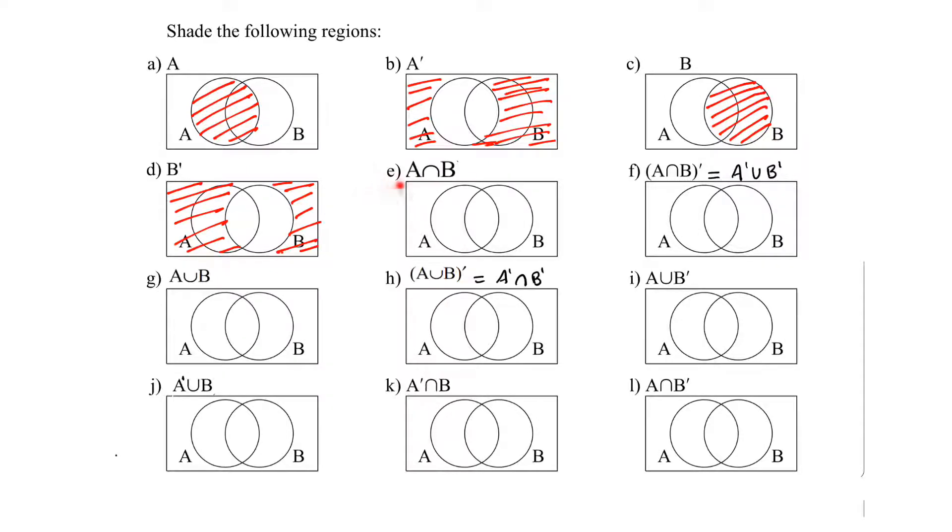In the next question they are saying A intersection B. A intersection B means elements which are in A and also in B. It is the overlapping part that we will shade. So it is this part. Remember that whenever they say A and B it means intersection.